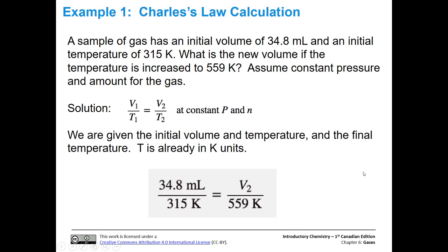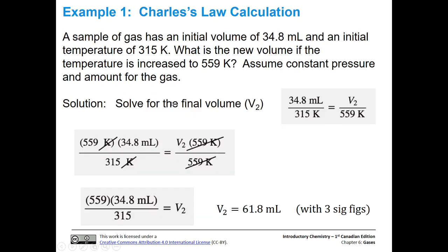Since we have volume and temperature, we're going to be using Charles's Law for this calculation. Here's Charles's Law. We know that we're given the initial volume and the initial temperature. So we have V1 and T1. We also have the new temperature, which is T2. Let's go ahead and plug everything in. And this is where we are right now. The temperature is already in Kelvin, so we're in good shape there. We don't have to worry about a conversion.